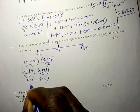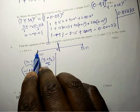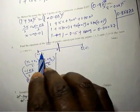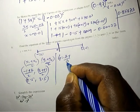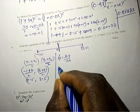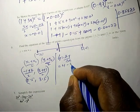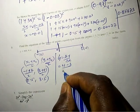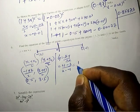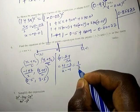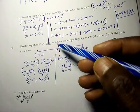This gives us the coordinate 0.5, 3.5. Next, we get the gradient of the line joining the two points: change in y over change in x, that is 4 minus 3 divided by 2 minus negative 1, which gives us 1 over 3. So the gradient of this line is 1 over 3.